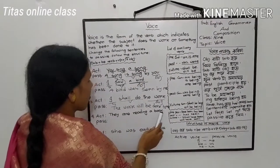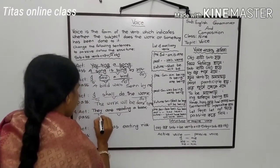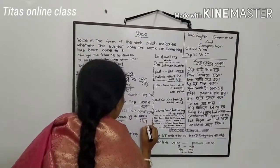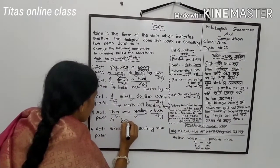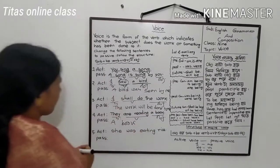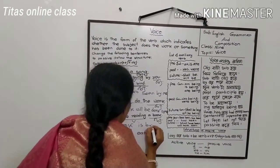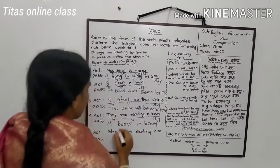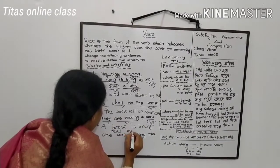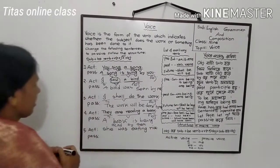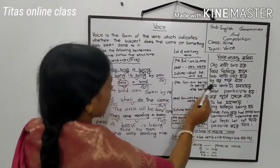Next one: 'They are reading a book.' 'Are reading' is the verb; 'they' is subject and 'a book' is object. This statement is present continuous tense. We must use 'am being,' 'is being,' or 'are being' as the auxiliary verb in the passive voice.